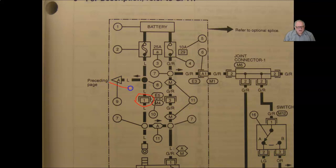The A that we have over here with the arrow means you would go to the previous page, you would find the A, and that would be the continuation of this wire. If the arrow is pointing to the right, it would be the next page.